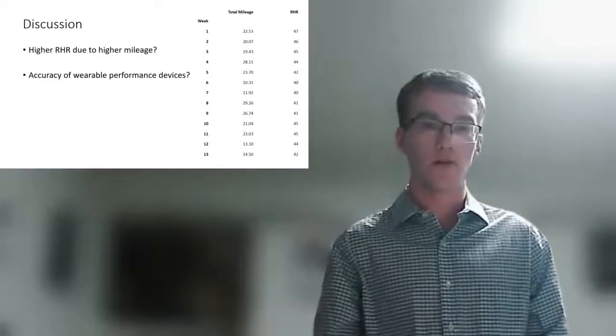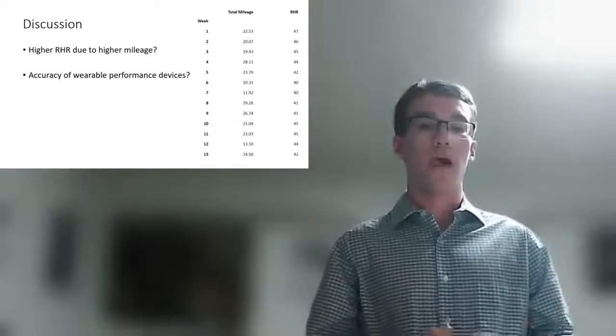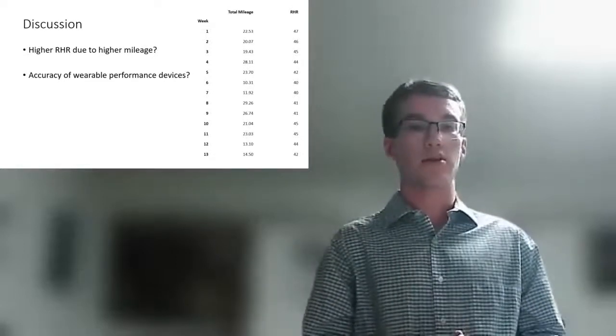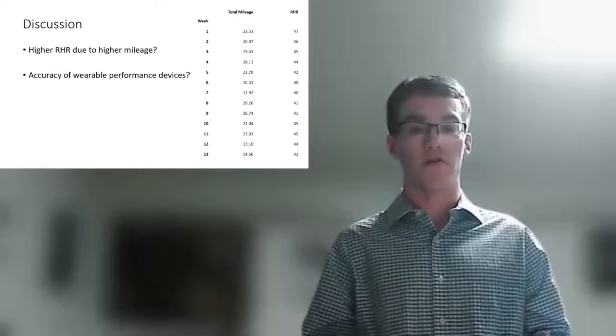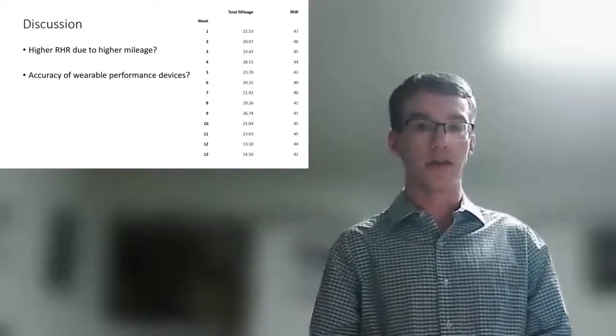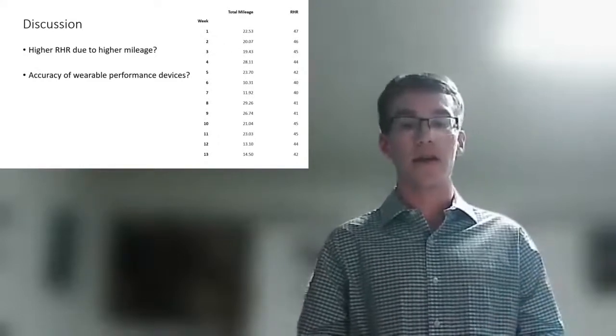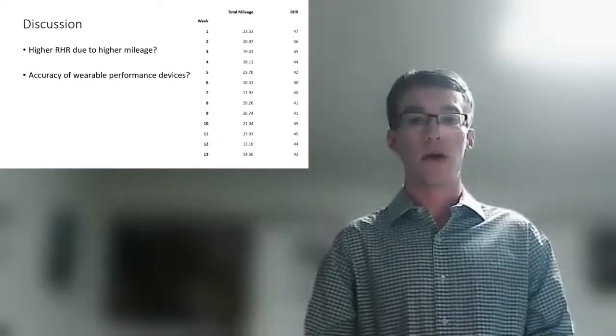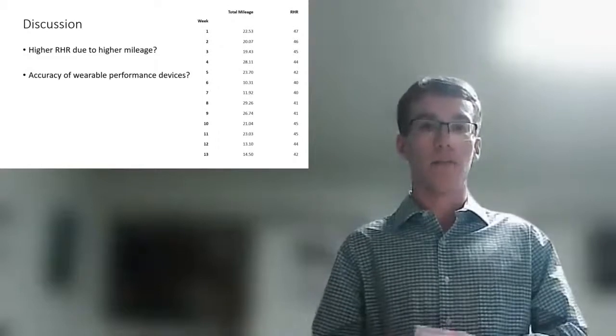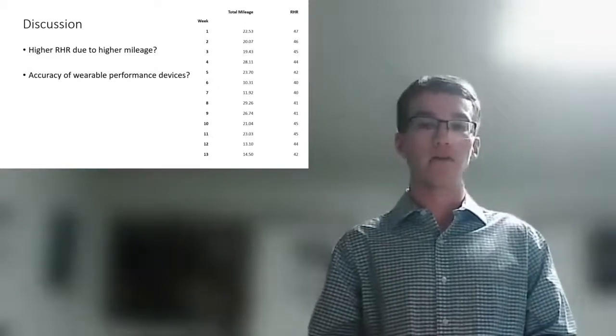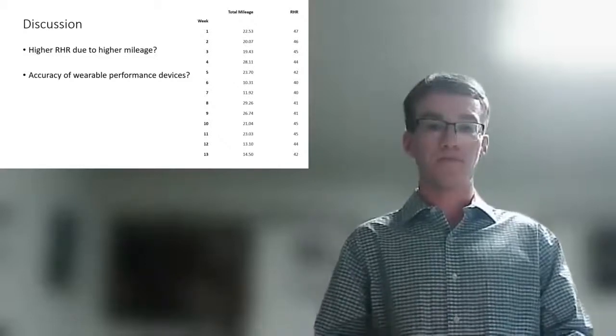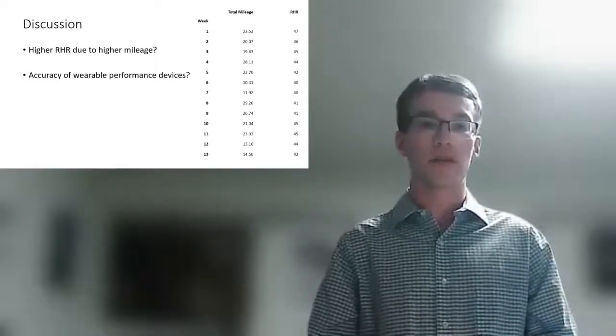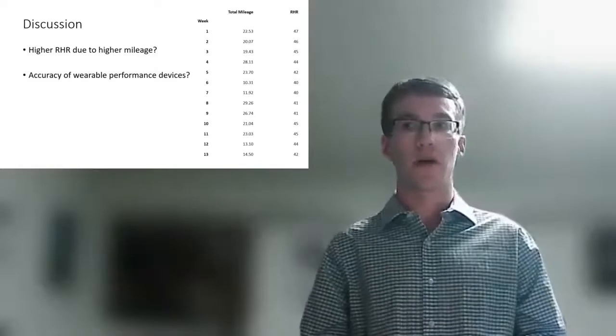I actually came across some articles in my literature review that pointed to higher intensity workouts leading to a higher resting heart rate, in that workouts that had higher mileage or were just harder on your body require a greater recovery. So when you're sleeping and your heart rate is the lowest, your resting heart rate is actually higher than it would be if you had done a less intense workout. I believe that if we look at my training plan to the right here, we can see that two of my highest mileage weeks were weeks 8 and 9, and that was about the time where we saw an uptick in my resting heart rate. And you can see it subsequently drops back down as my mileage decreases. I think that's a good way to explain that fluctuation we saw in the resting heart rate.